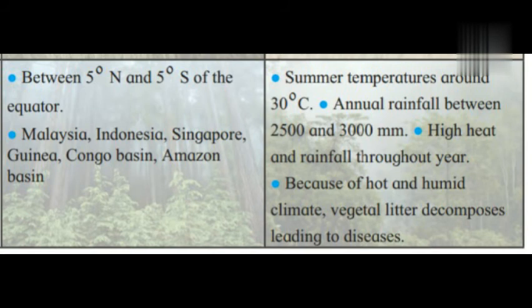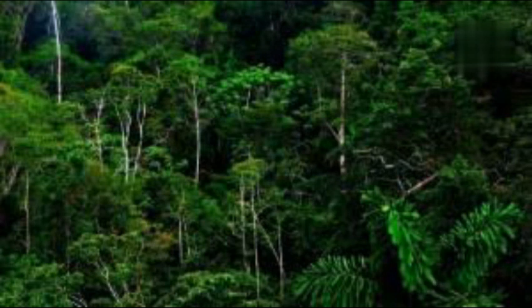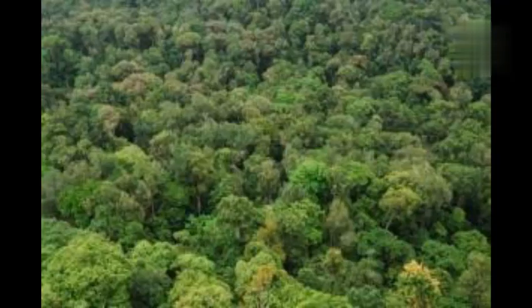There is high heat and rainfall throughout the year. Due to the hot and humid climate, vegetal litter decomposes rapidly, leading to diseases. In natural vegetation, there are dense evergreen forests with a variety of trees and bushes. The land is swampy with tall, hard-wooded trees.